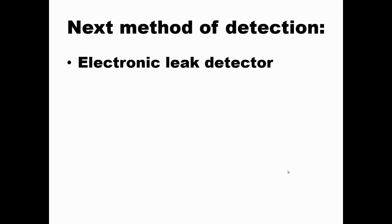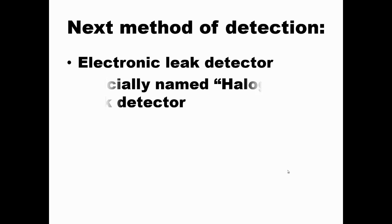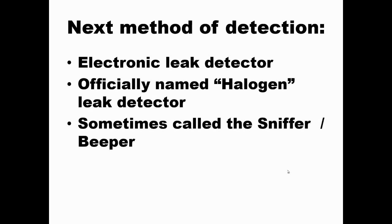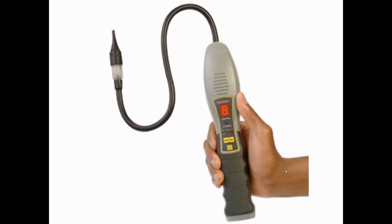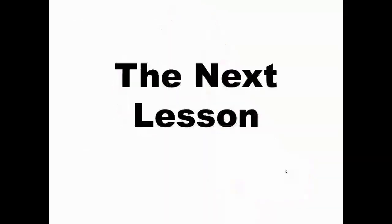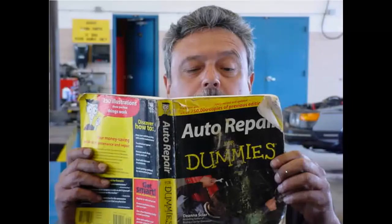Our next method of detection is the electronic leak detector called the halogen — sometimes called the sniffer and beeper. That's going to be our next lesson. Thank you all.